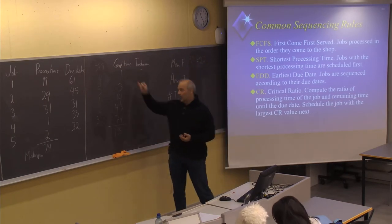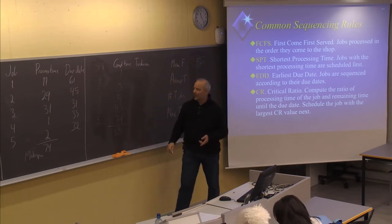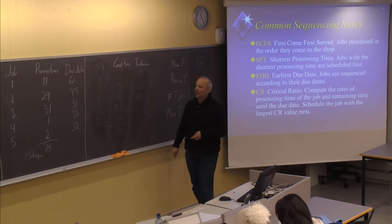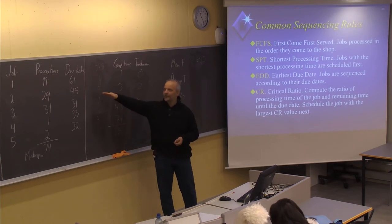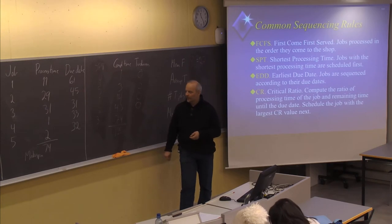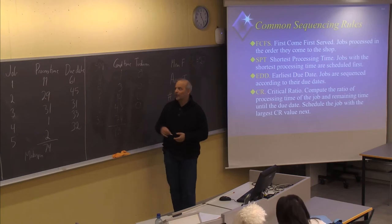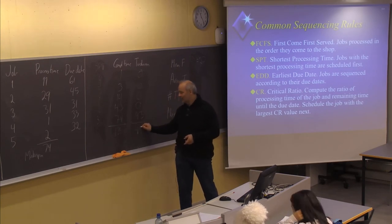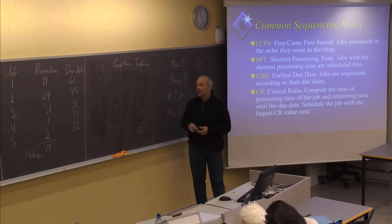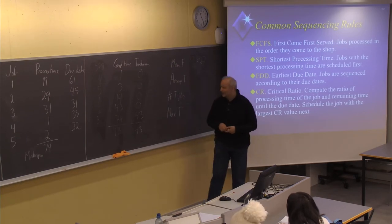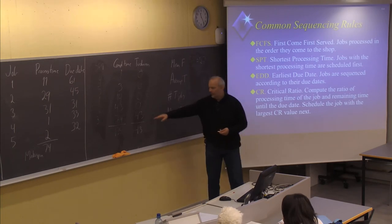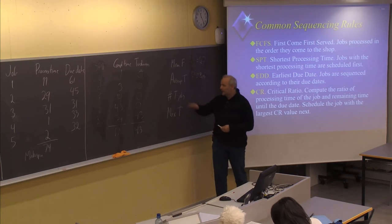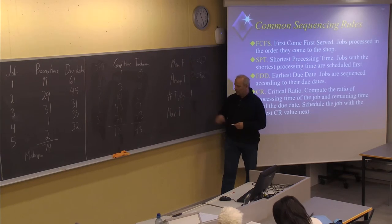Looking at the tardiness: job number four, job number five, and job number one are finished well before the due date, so that's not a problem. Job number two is finished by day 43 and should be finished by day 45, so it's also in time. But job number three is finished at day 74 but has a due date of 31, so it is 43 days delayed. The sum of tardiness is 43 — we have only one job delayed, but it is very much delayed. The average tardiness is 43 divided by five, which is 8.6. The number of tardy jobs is 1, and the maximum tardiness is 43.